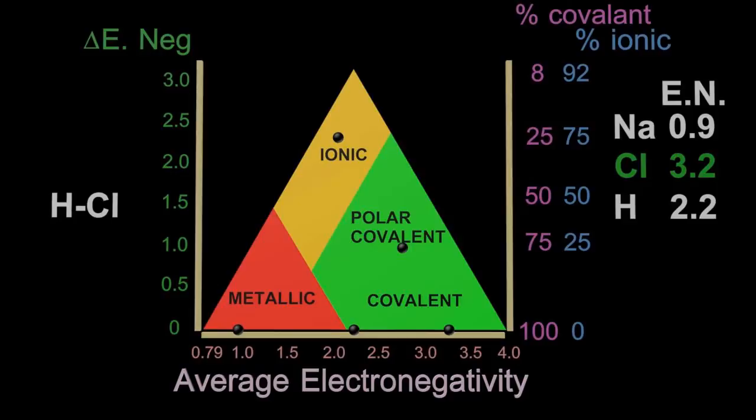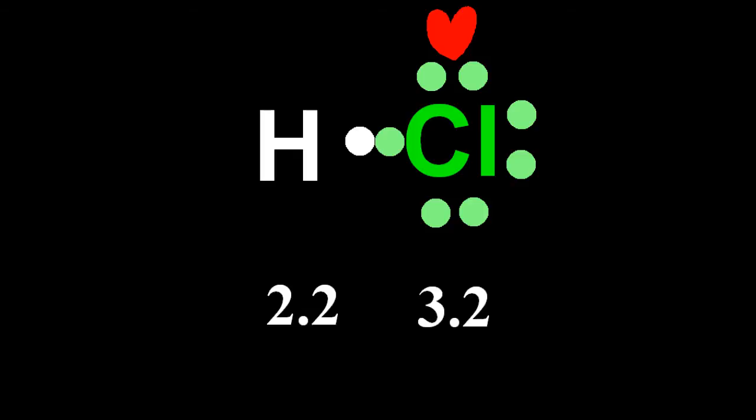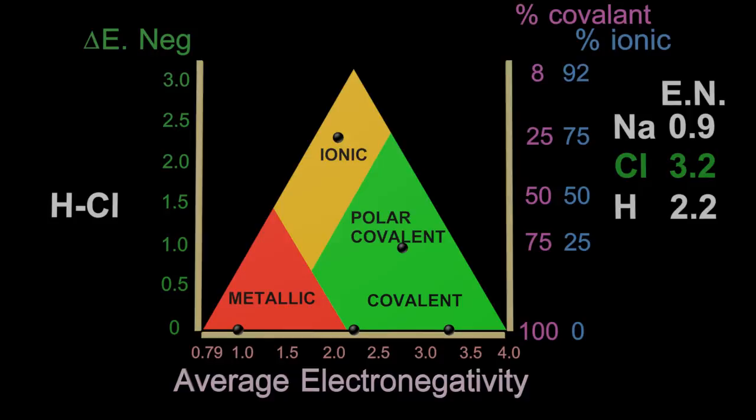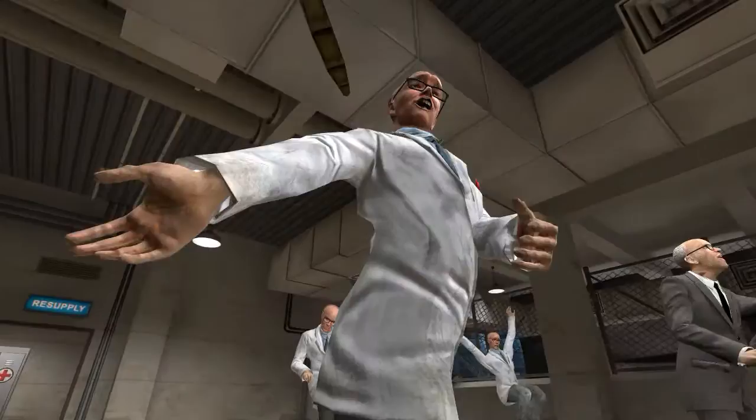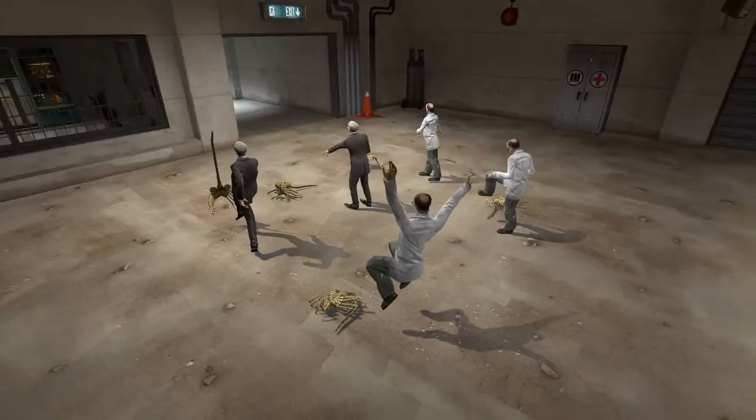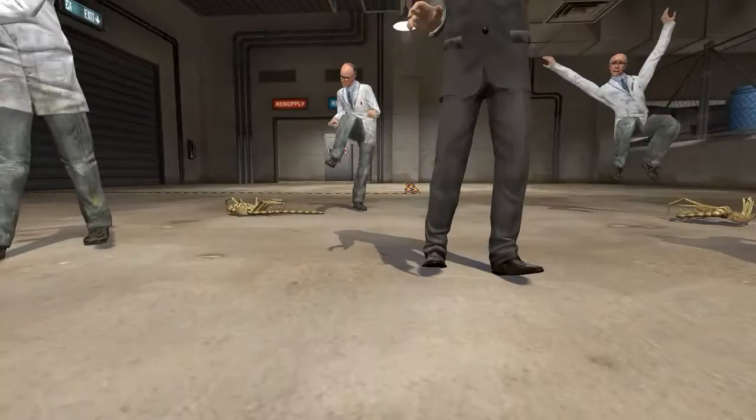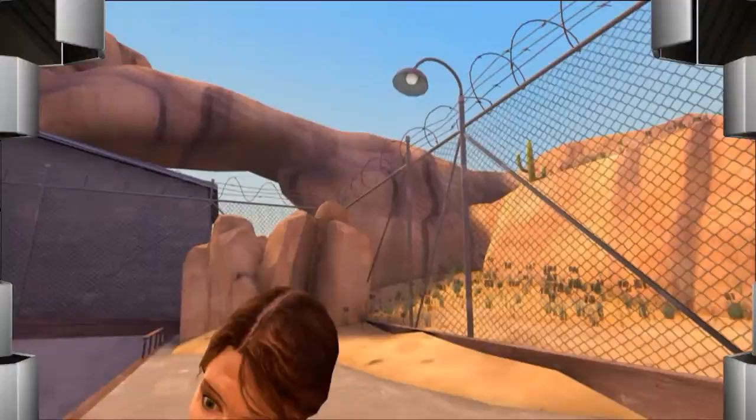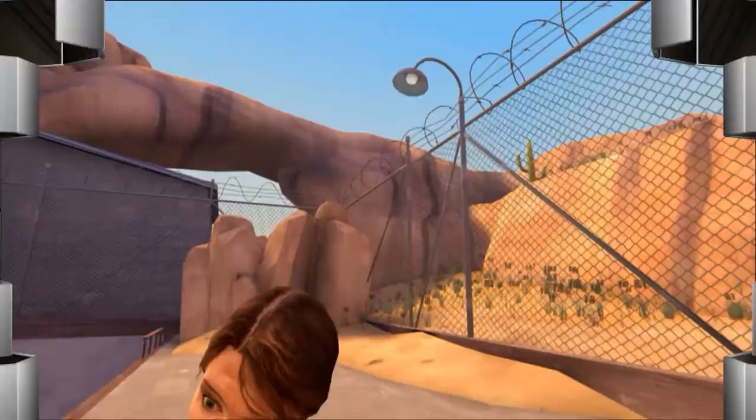And finally, hydrogen chloride. You can see that both of those atoms like electrons, but not so much that they're going to be able to pull an electron off of the other one. So they're going to share electrons. They're not going to transfer electrons. And so this uneven sharing of electrons is called a polar covalent bond.